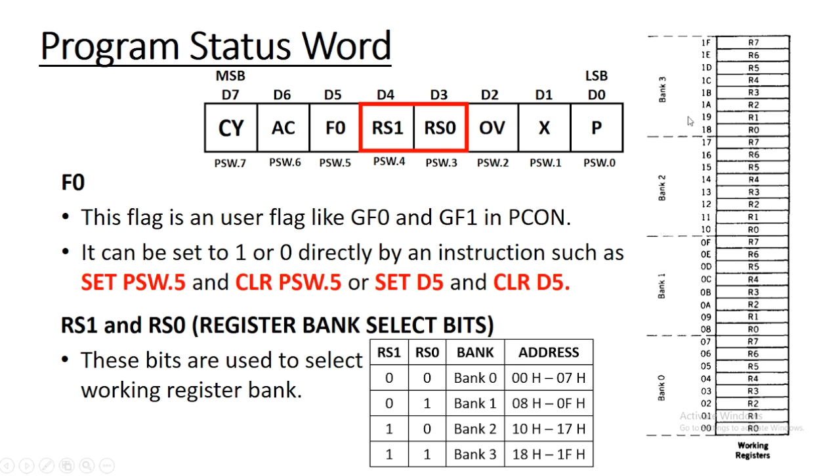Out of which, only one bank is active at a time. And which bank will remain active is indicated by these two bits. These bits are used to select the working register bank.